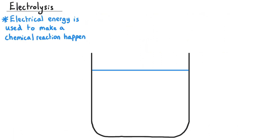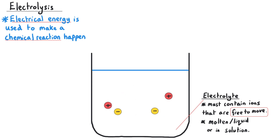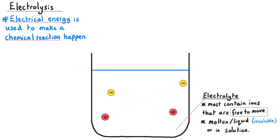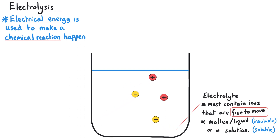Electrolysis is a process where electrical energy is used to make a chemical reaction happen. In electrolysis you need to have some kind of container, possibly a beaker, with an electrolyte in it. The electrolyte needs to be an ionic compound, and the ions in that compound need to be free to move. This means we could have a molten ionic compound — necessary if the electrolyte is insoluble — or a solution of a soluble ionic compound. Both of these have got ions that are free to move.